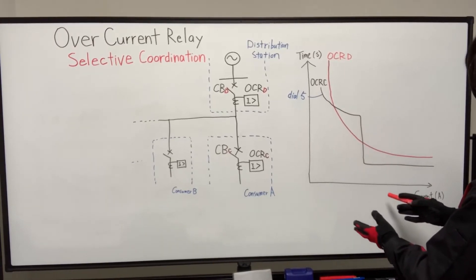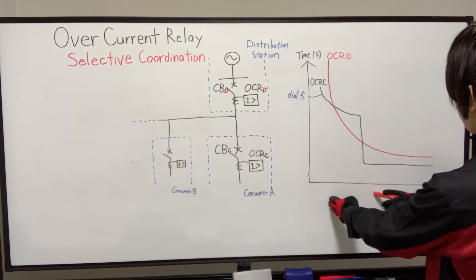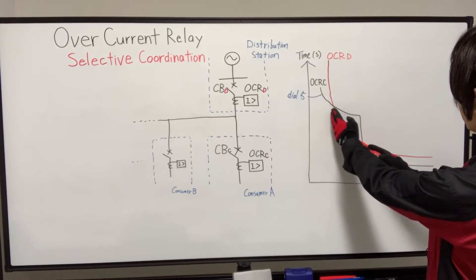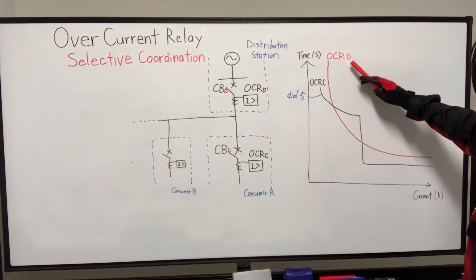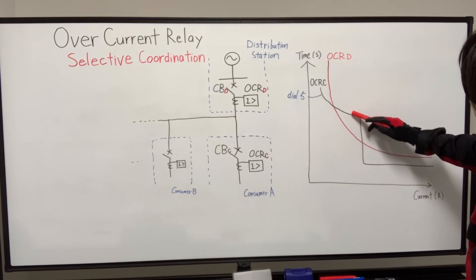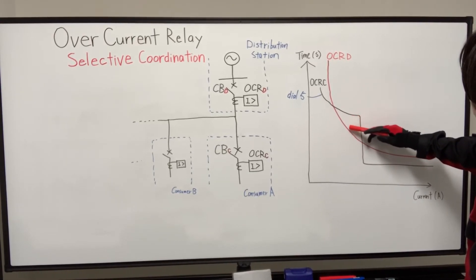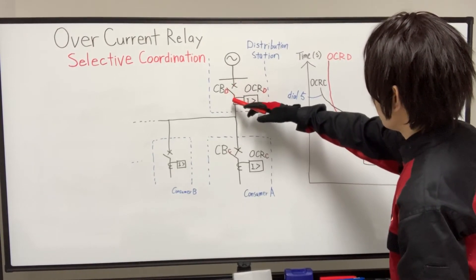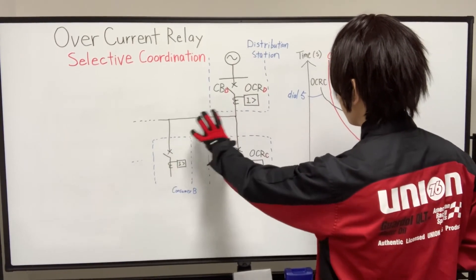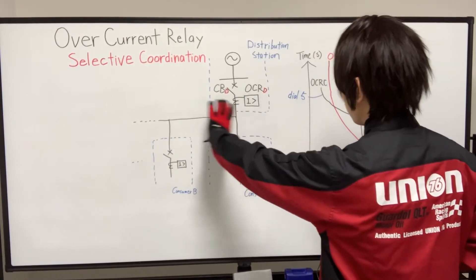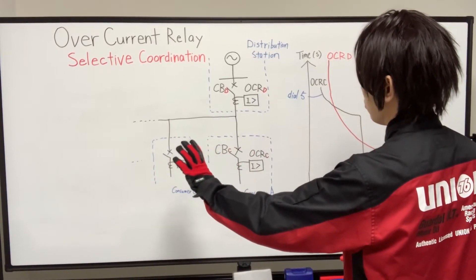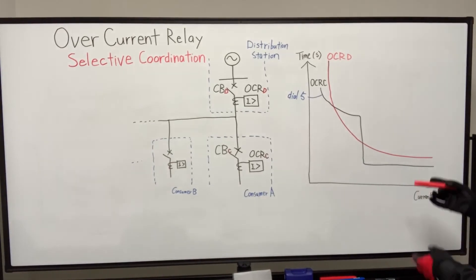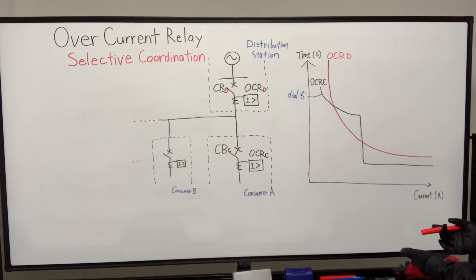Because if fault current occurs an amount of between here to here, OCR D, this OCR D will operate and circuit breaker D interrupt this whole power system. That means this whole area will be blackout, even including healthy parts of other consumers. That is a big problem. So we needed to do something.